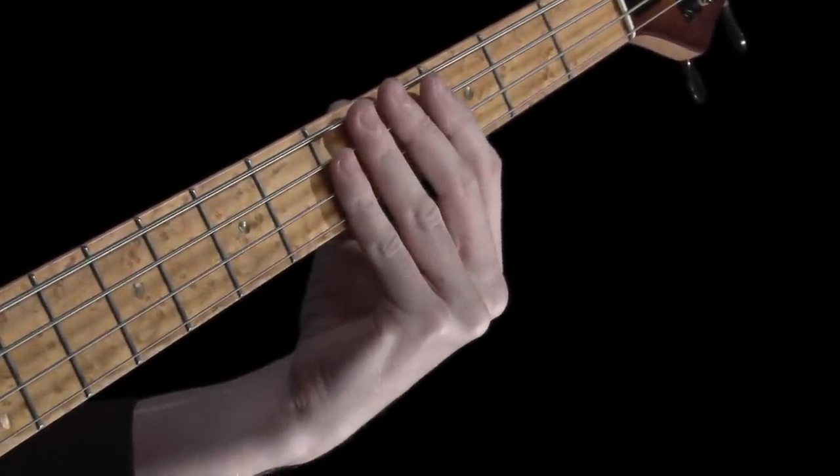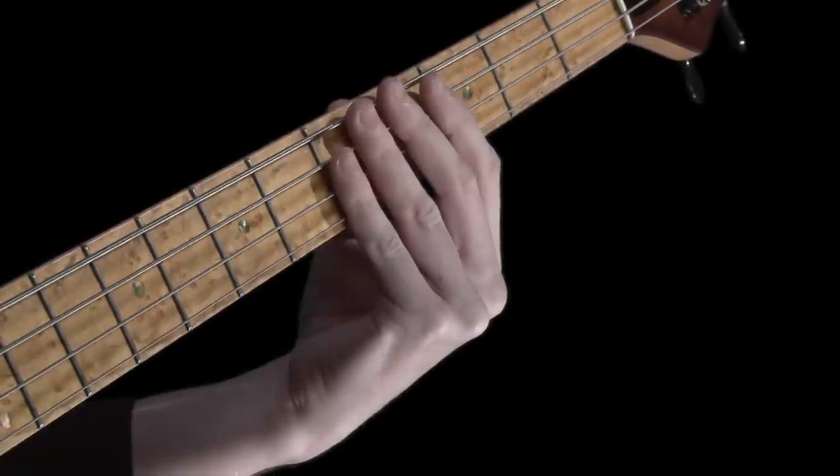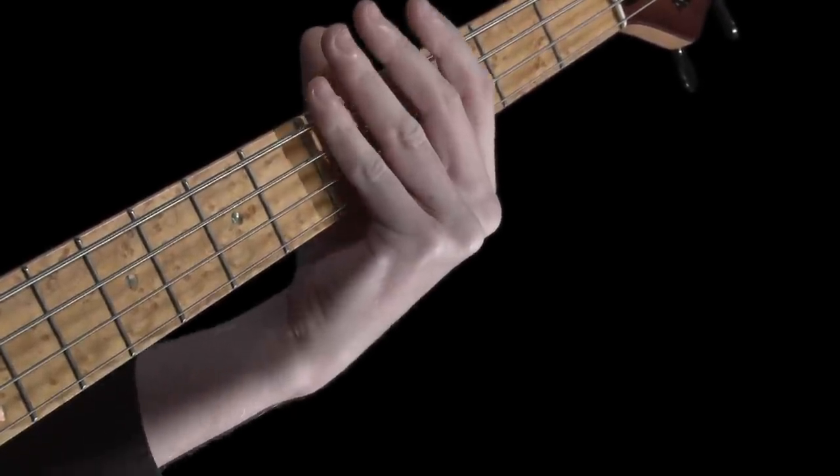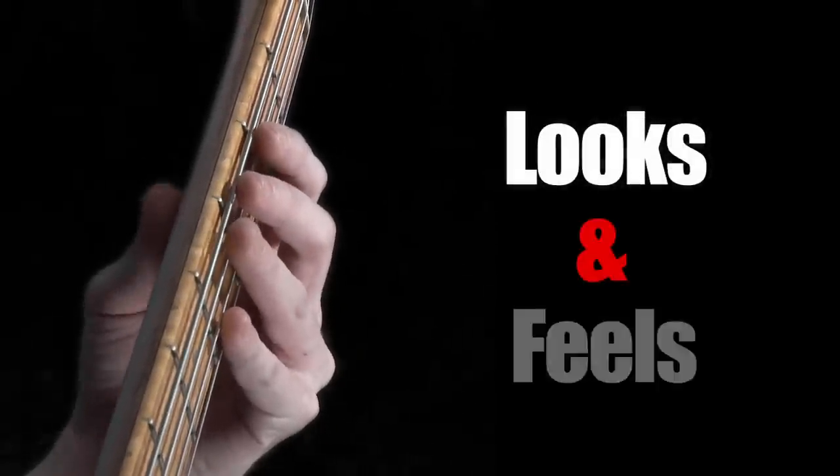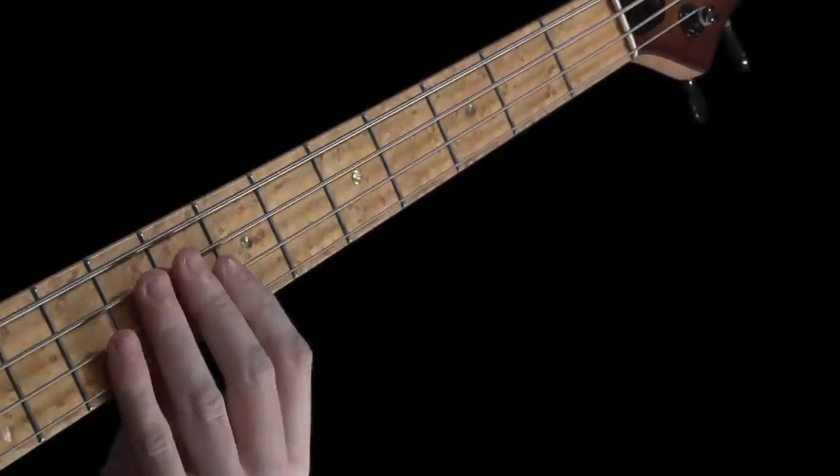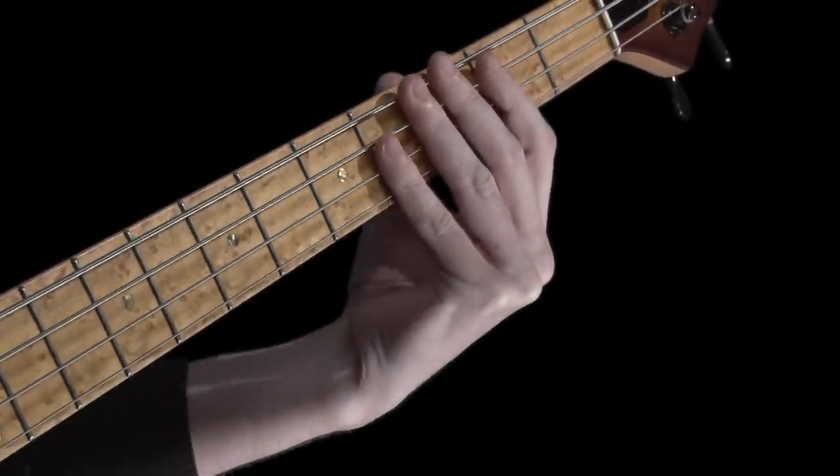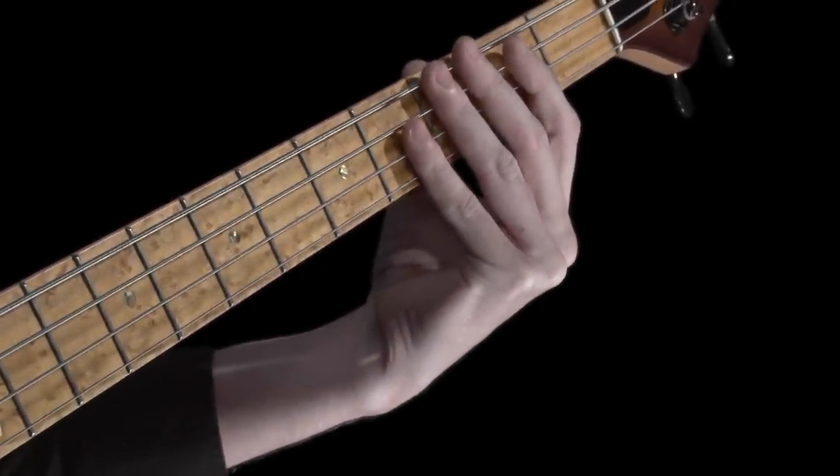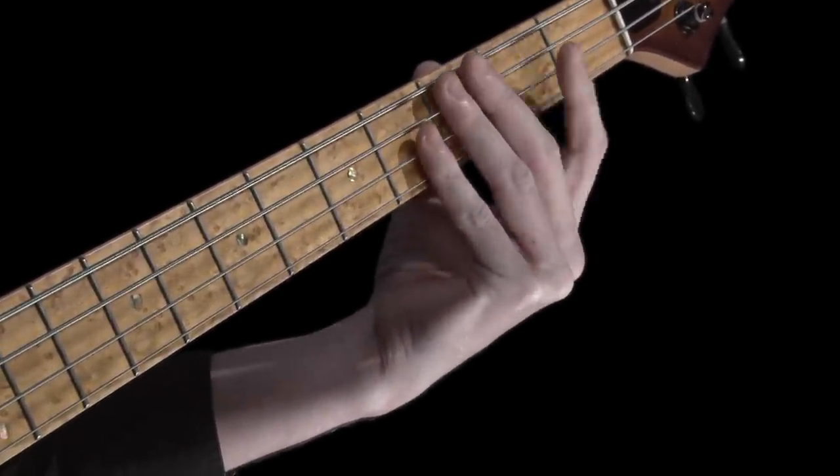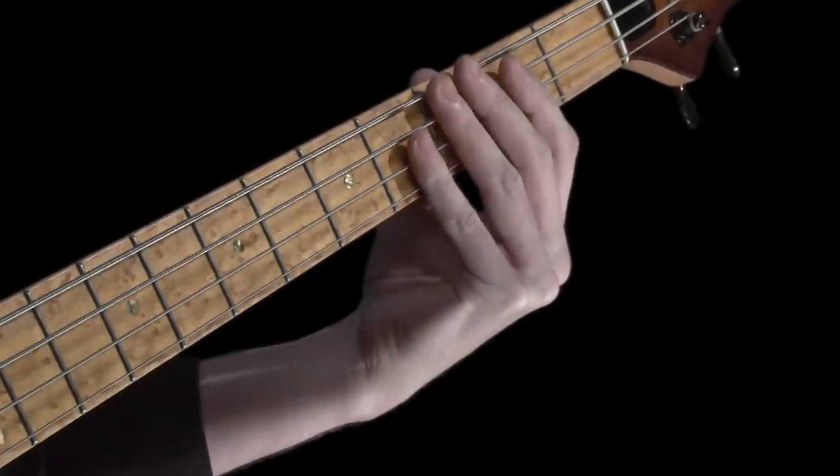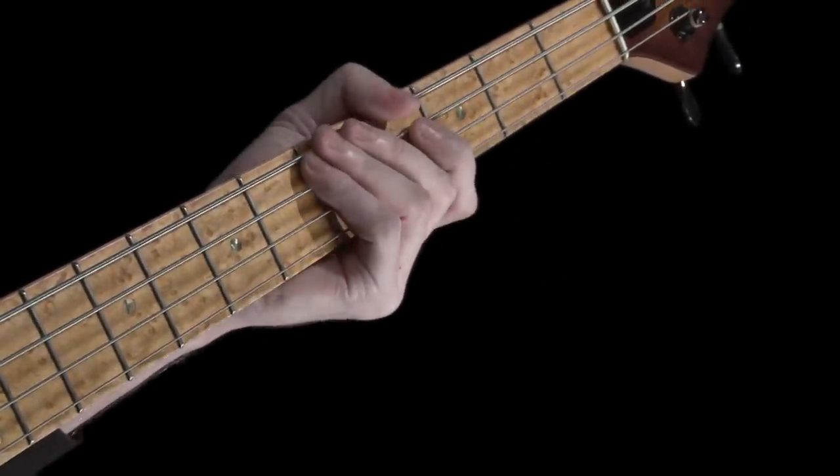Now, just allow your hand to fall slightly down across the neck until your thumb is somewhere near the middle. Take some time to get used to how this looks and also feels. Try sliding this hand shape up and down the fingerboard, but make sure you're still focusing on keeping your hand and fingers totally relaxed. You shouldn't be trying to hold onto the neck.